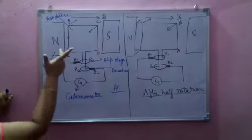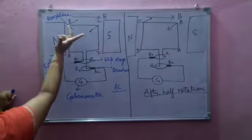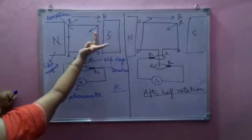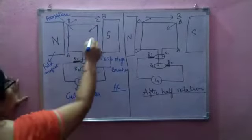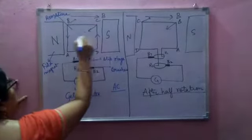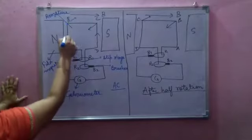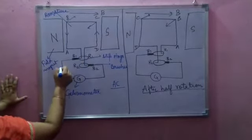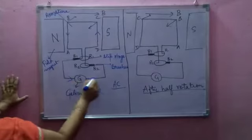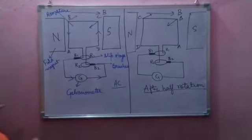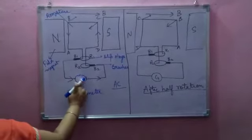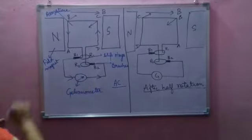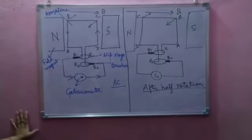Now applying the same thing to CD: the magnetic field is here and the arm comes out, so the current is upward in CD. In the outer circuit, the current moves from AB through brush B1 and to B2. So in this case, the direction of current will be from B1 to B2, and the galvanometer will show deflection in this direction.